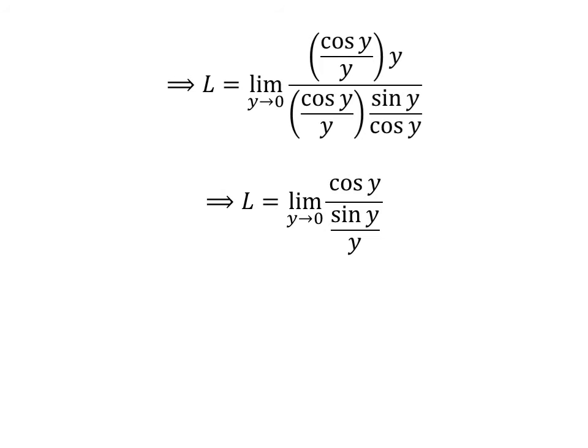Canceling out the common factor in each fraction gives us L is equal to limit of cosine of y upon sin of y upon y as y approaches 0.